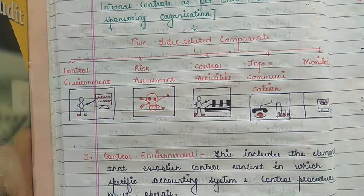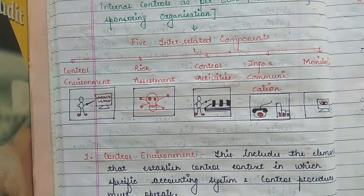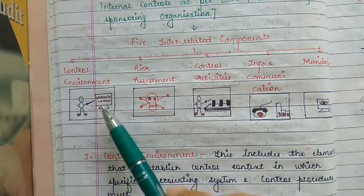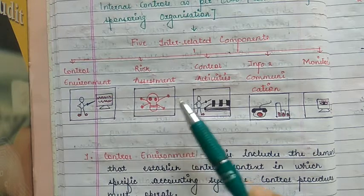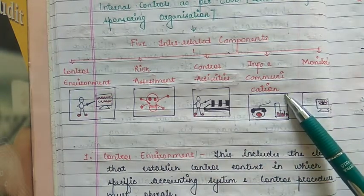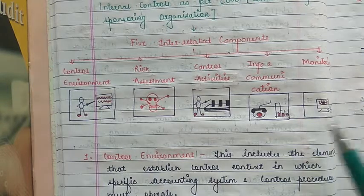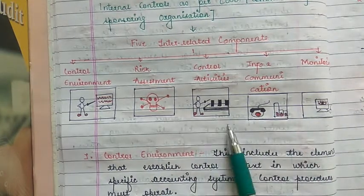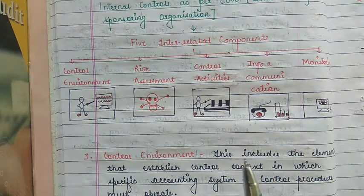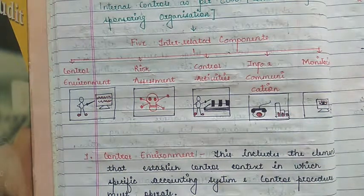With this, we completed the whole governance system. Let's move on to internal control as per the COSO framework, which contains five interrelated components: control environment, risk assessment, control activities, information and communication, and monitoring. With these five interrelated components present in each organization, we can say that an enterprise has a good internal control system.